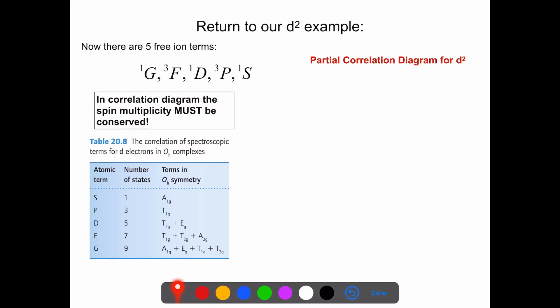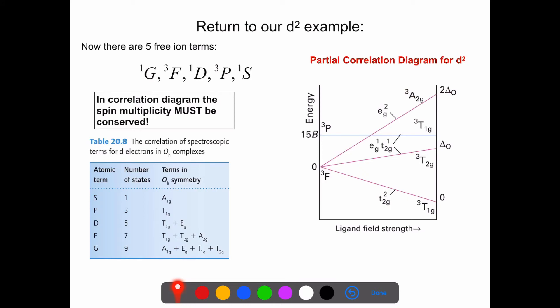Let's go to a more complicated example - a D2 case, where we have two D electrons. The presence of that second electron does a lot to complicate our lives. We no longer have a single atomic term symbol to deal with, but rather five atomic term symbols. We have to understand what the ground state is - that's our triplet F state. We then have to think about when we put this into the crystal field, what happens to the degeneracy of all these states. The F state splits into three different terms, a P state would split into one term that is triply degenerate, and so on. Here's what the correlation diagram would look like - starting with our triplet F state, which splits into three terms in terms of ligand field strength, and the triplet P stays as one term, the triplet T1G case.